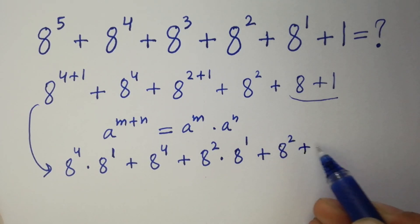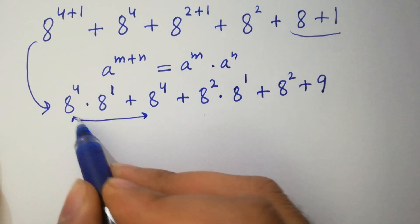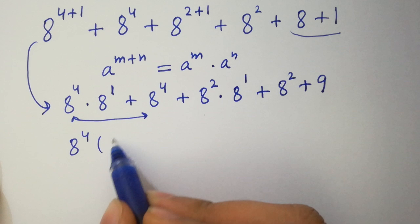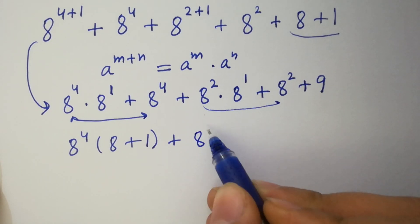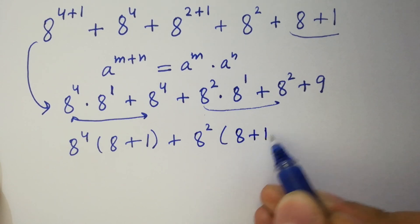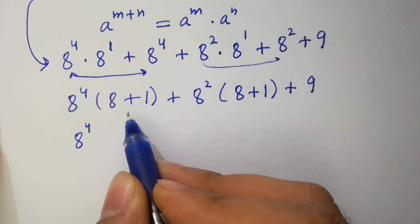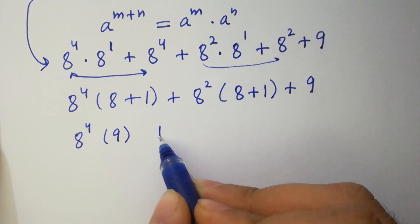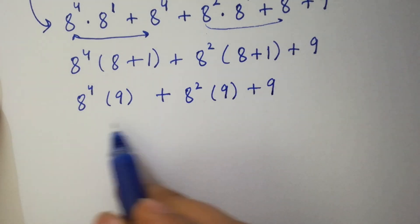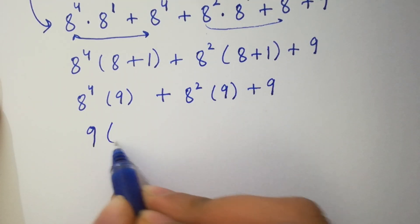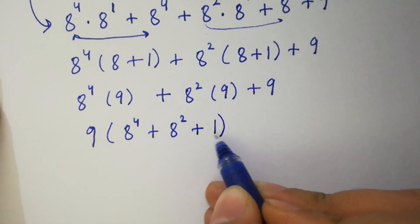Next, 8 plus 1 will be 9. Then 8 to the power 4 can be factored out: 8 to the power 4 times (8 plus 1), plus 8 to the power 4 times (8 plus 1), plus 9 as it is. So we have 8 to the power 4 times 9, and then 9 times (8 to the power 4 plus 8 squared plus 1) as it is.